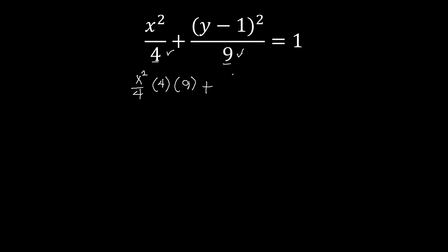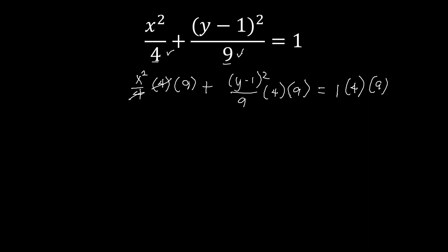For the second term, y minus 1 squared over 9, multiply by 4 and 9. The right-hand side 1 is also multiplied by 4 and 9. Canceling: for the first term, cancel the 4s, leaving 9 times x squared, which is 9x squared. For the second term, cancel the 9s, leaving 4 times y minus 1 squared. The right side gives 1 times 4 times 9, which is 36.